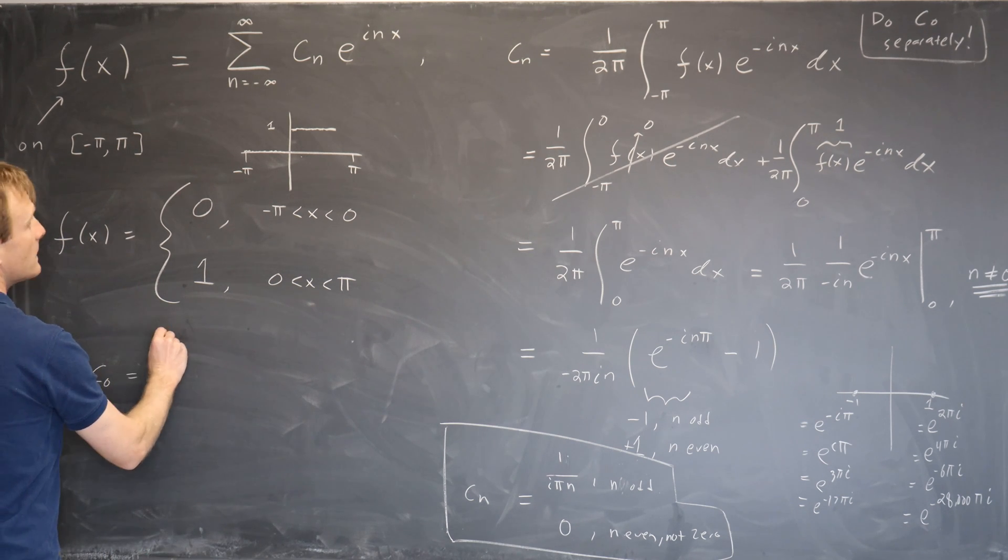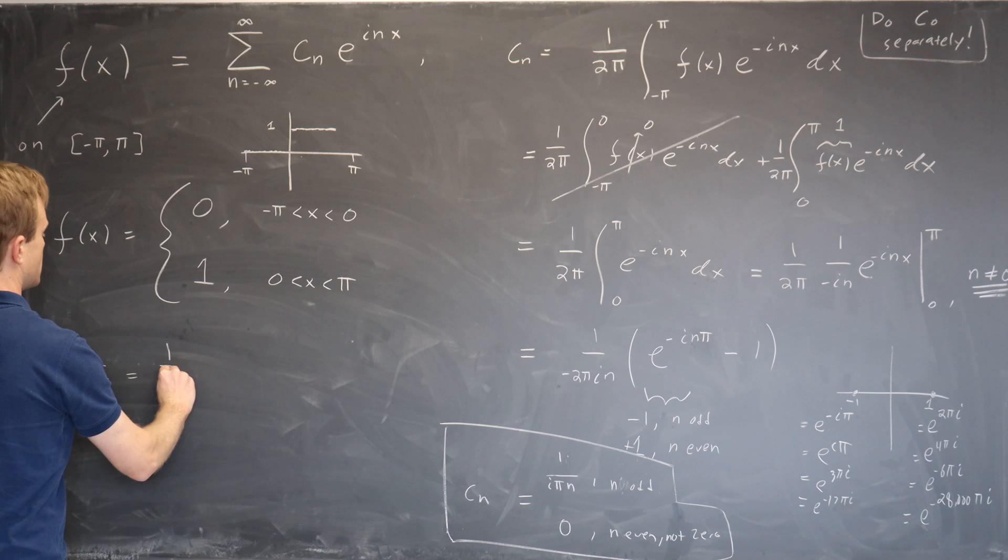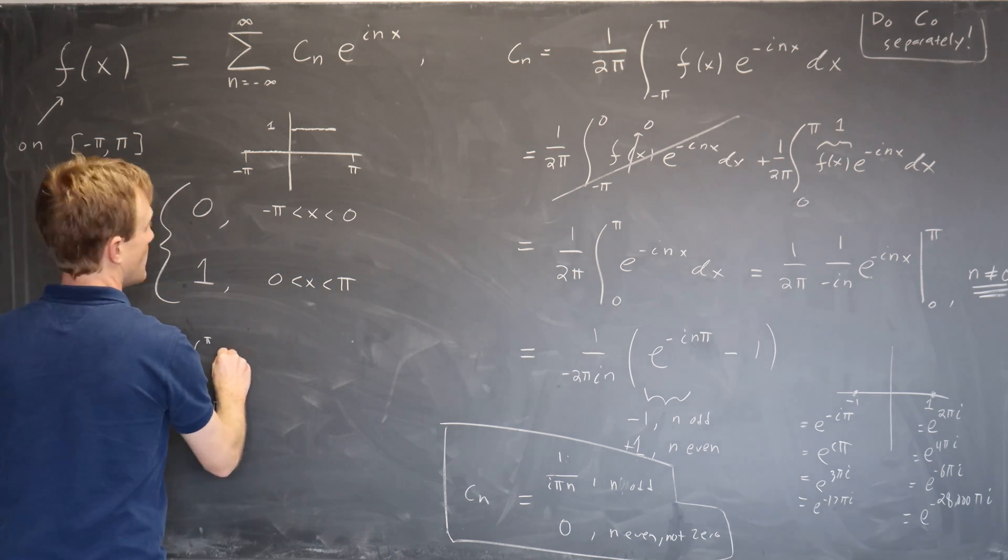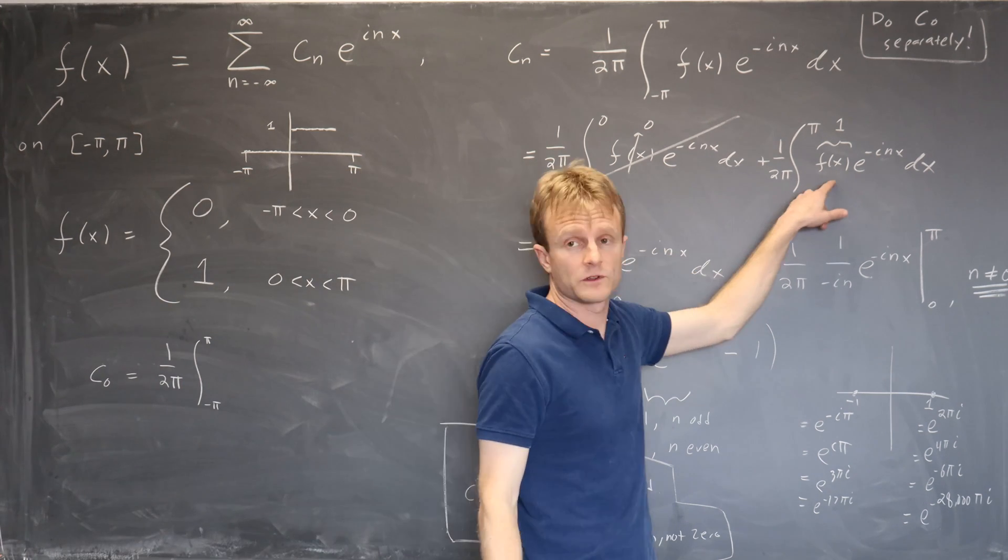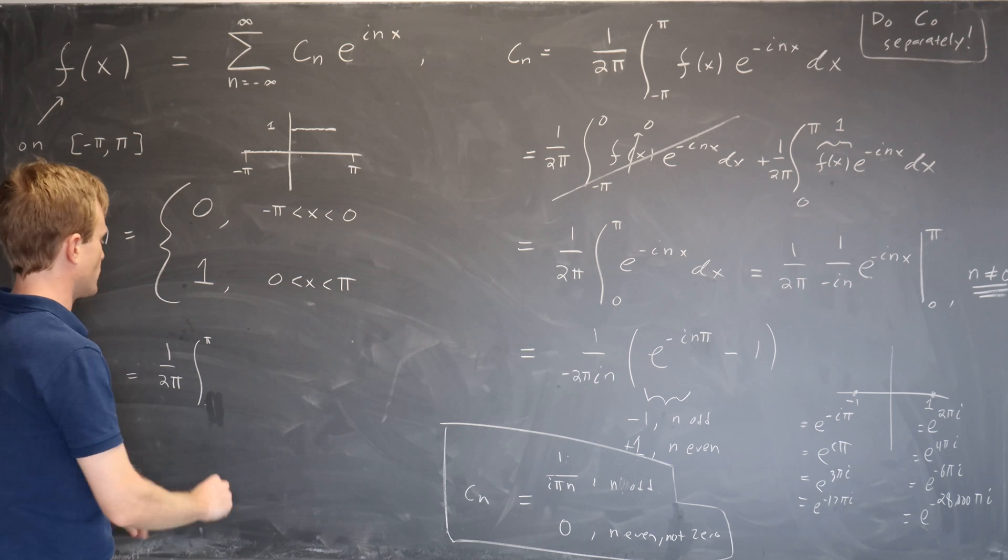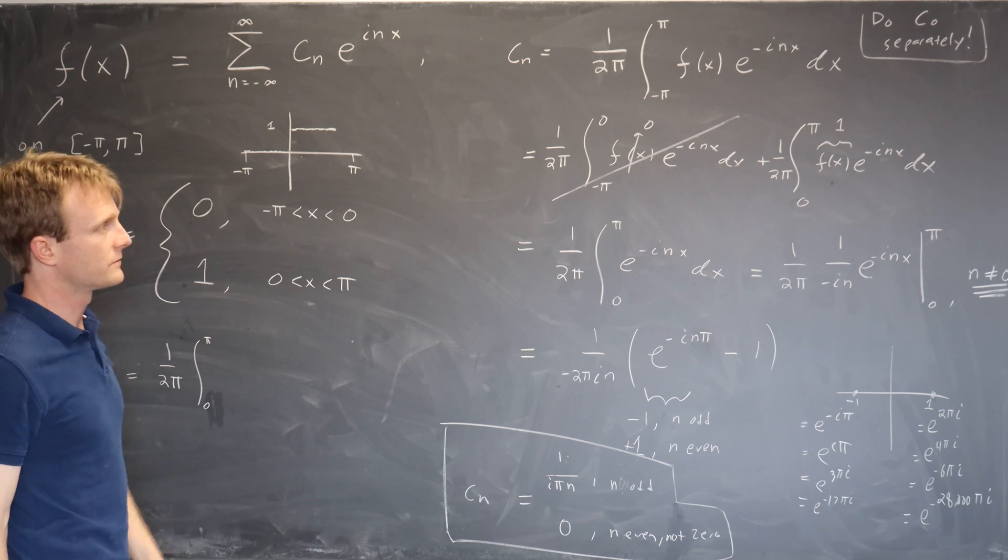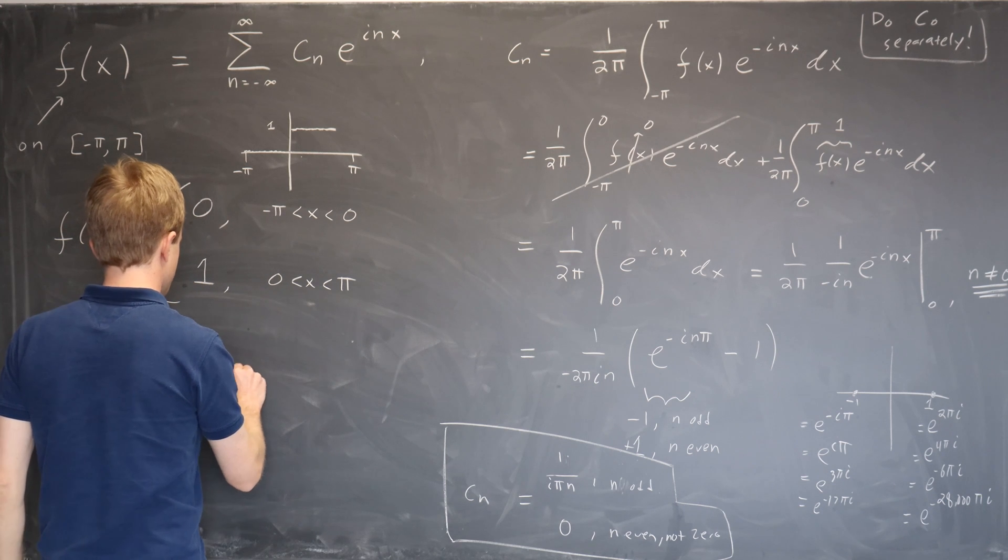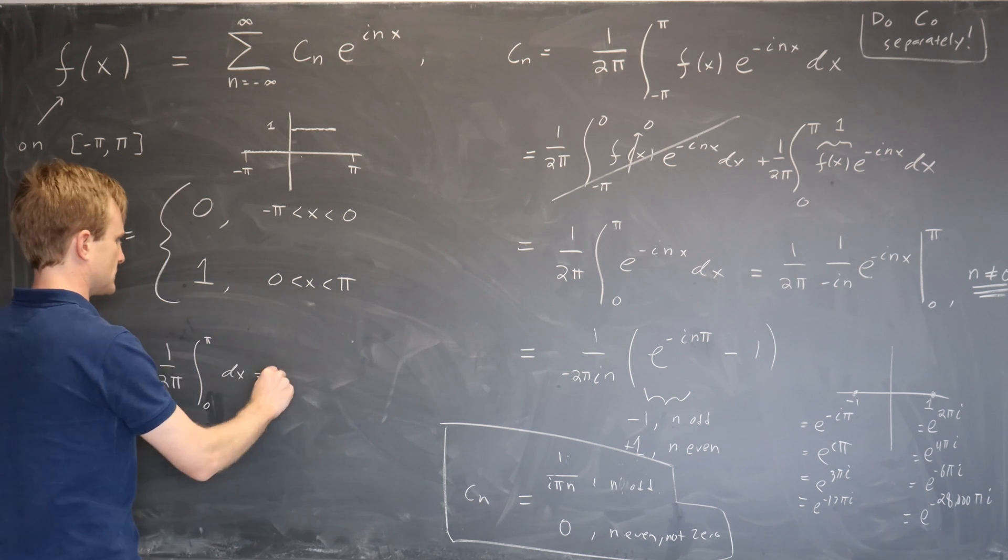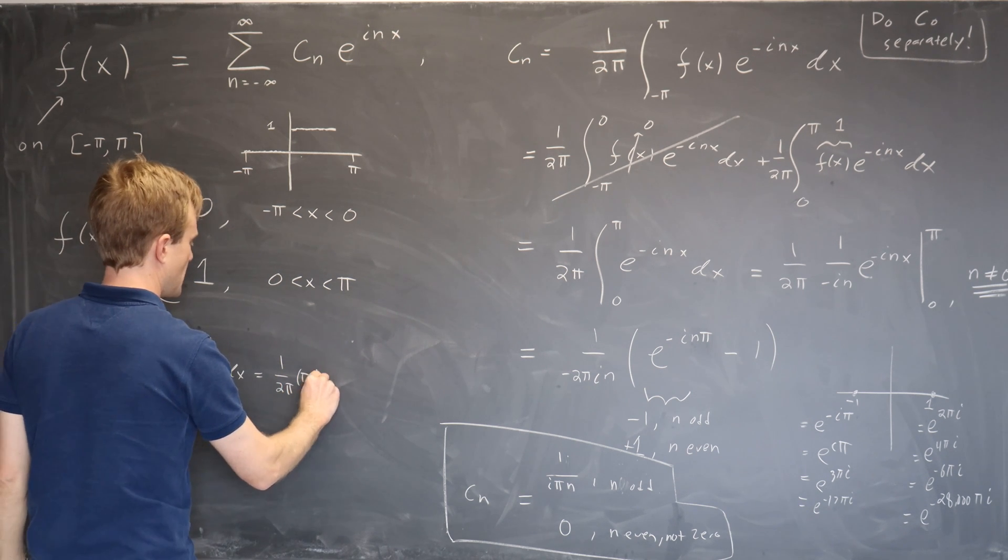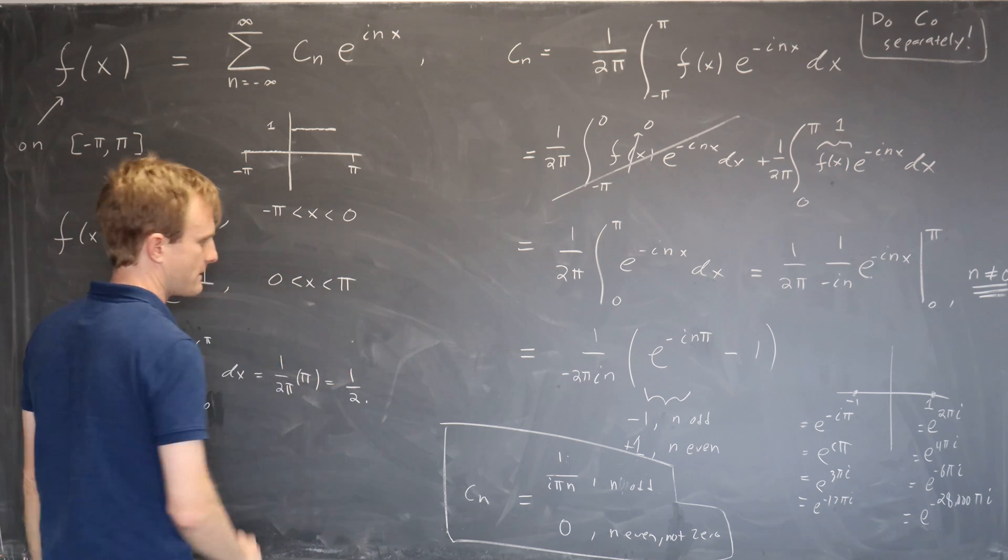Now we come back to the last part. Let's do c_0 separately. c_0 is 1 over 2 pi integral minus pi to pi. Well we can start here. This is the first place we need to do n equals 0 separately. So that's 1 over 2 pi integral from 0 to pi of just dx, which is equal to 1 over 2 pi times just the length of this interval pi, which is equal to 1 half.